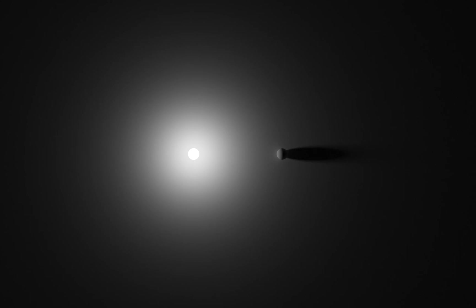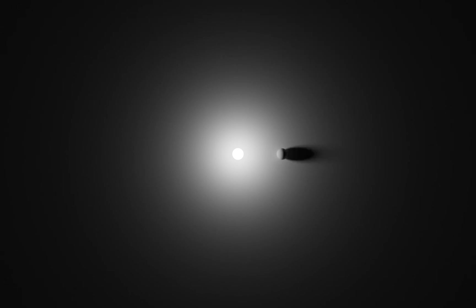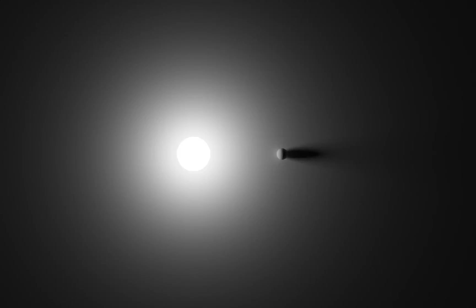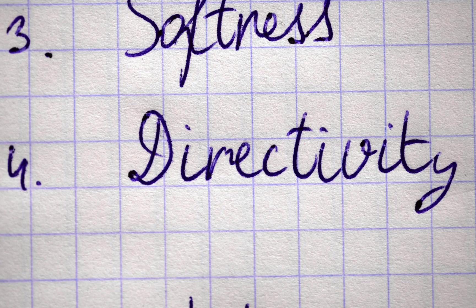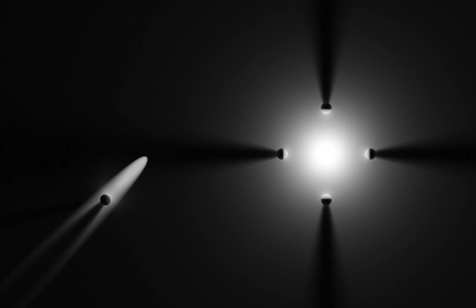2500K is a warm light, 4200K is natural daylight, 6500K is a cold light. Softness: if you use a small light source or if you have a large distance between the light source and objects, you will get hard shadows. The sun is pretty big but it's too far away. To get soft shadows, put the light source closer to the object or scale it up. The larger the light source relative to the illuminated object and the closer it is, the softer the shadows. Directivity: light can be directed both to a certain point or in different directions.